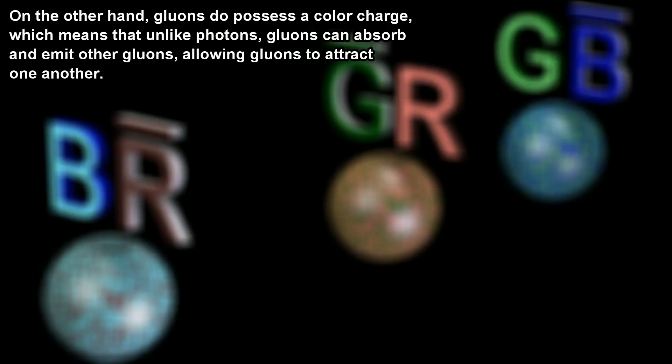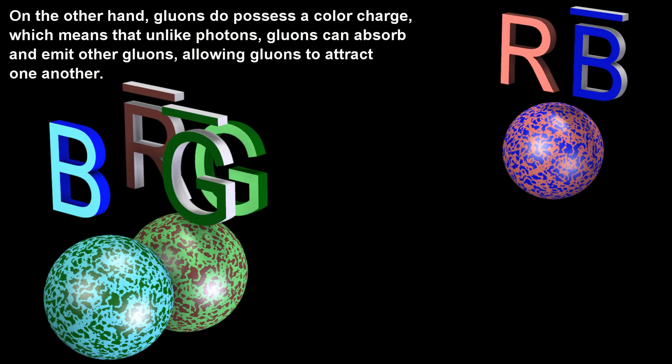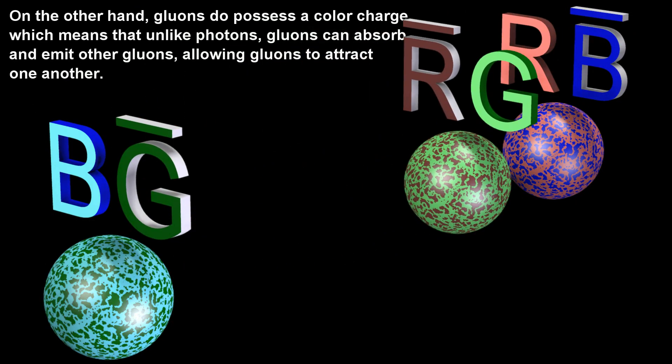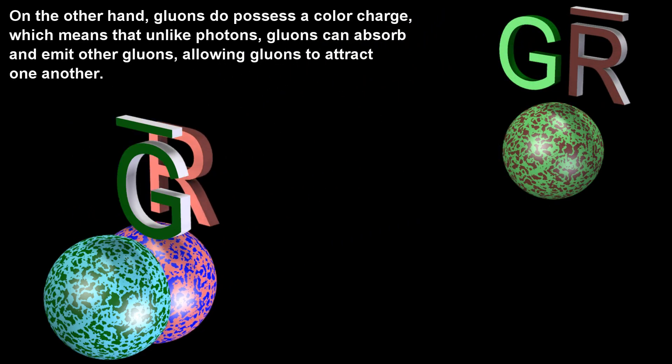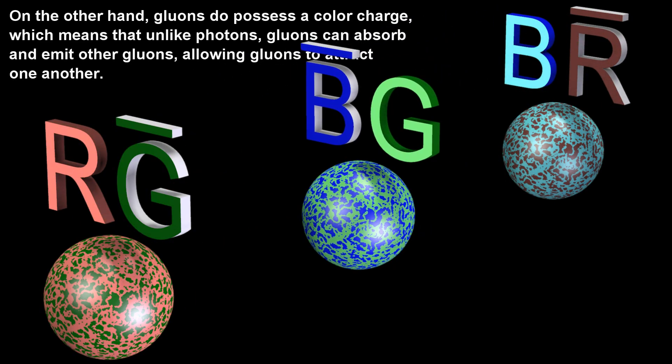On the other hand, gluons do possess a color charge, which means that unlike photons, gluons can absorb and emit other gluons, allowing gluons to attract one another.